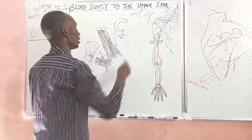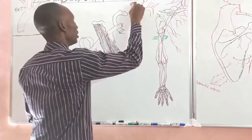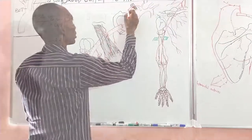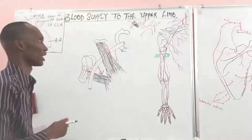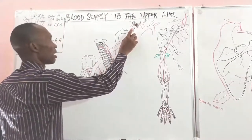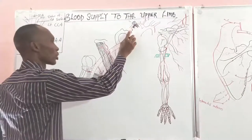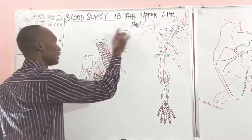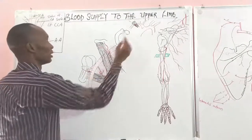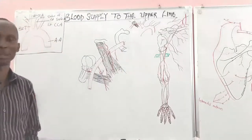The scalenus anterior runs across it, and the artery runs deep to the scalenus anterior, giving it three parts. The first part of the subclavian artery is the point between its origin and the upper margin of the anterior scalene muscle. The second part, called the posterior part, is the part that lies deep to the scalene muscle. The third part is the part that runs from the outer margin of the scalene muscle to the outer border of the first rib.